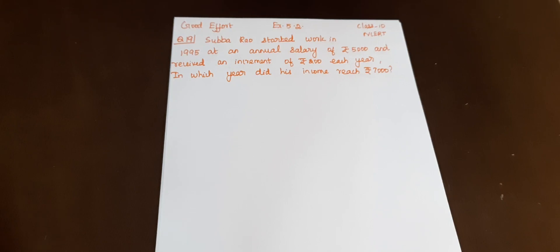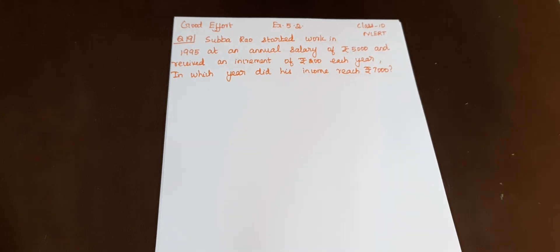Welcome to Goodafford Channel. Good morning students. In this session, exercise 5.2 question number 19. Shubha Rao started work in 1995 at an annual salary of Rs. 5,000 and received an increment of Rs. 200 each year. In which year did his income reach Rs. 7,000?